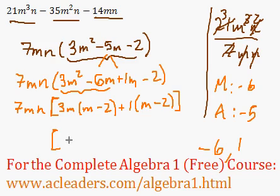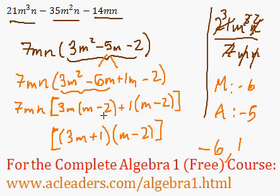The final step is to combine 3m and 1. So we have 3m plus 1, and multiply by m minus 2, which is the common binomial. Now we're completely done factoring by grouping.